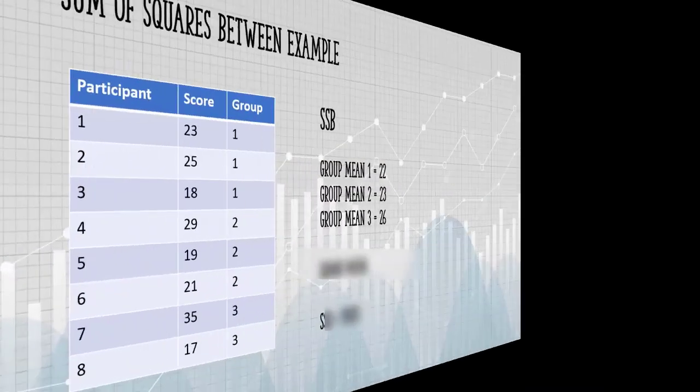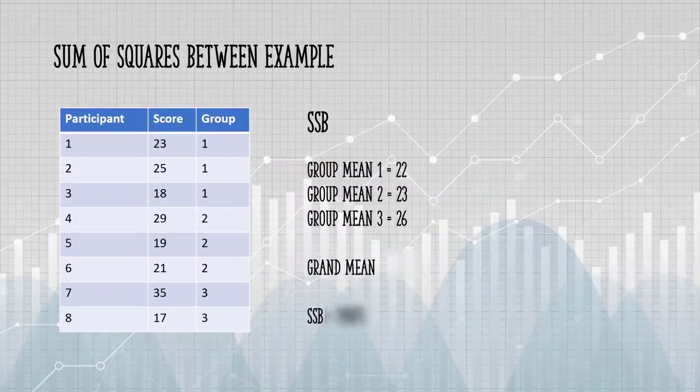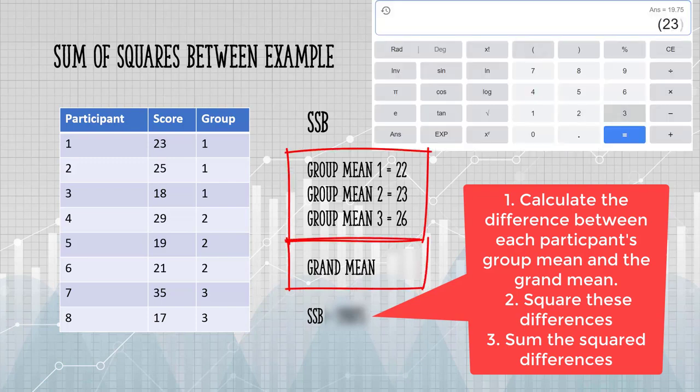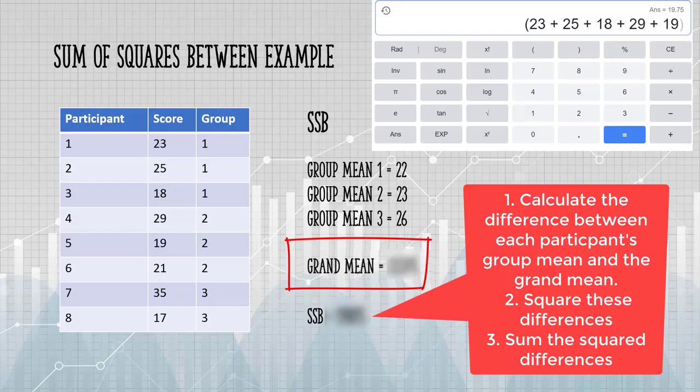Next, we're going to tackle SSB, or sum of squares between. For each subject, we want to calculate the difference between its group mean and the grand mean. For the grand mean, we're going to add all of the scores together and divide by eight.